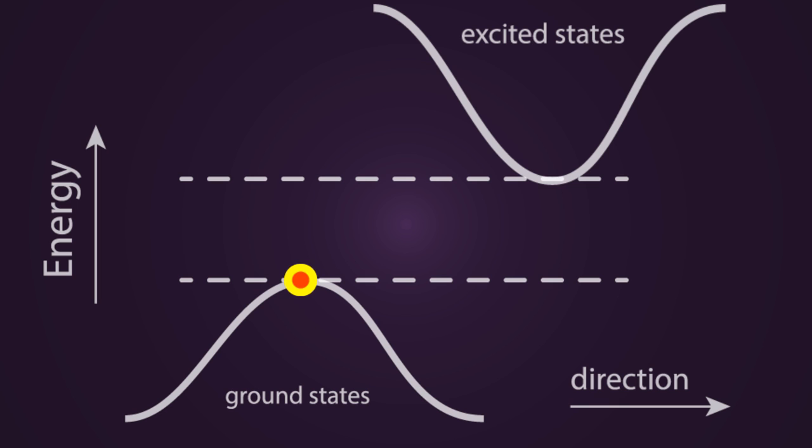TMDs with many layers have what is called an indirect bandgap. For an electron to move from the ground state to the excited state in an indirect bandgap material, it must gain energy and change direction. This significantly reduces its photo activity.